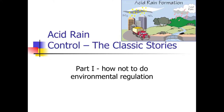Here's a picture of acid rain. You burn coal to create electricity, sulfur dioxide and nitrous oxide go up into the air, it makes the rain acidic. The rain falls on the forest and kills the trees, fish, and animals.